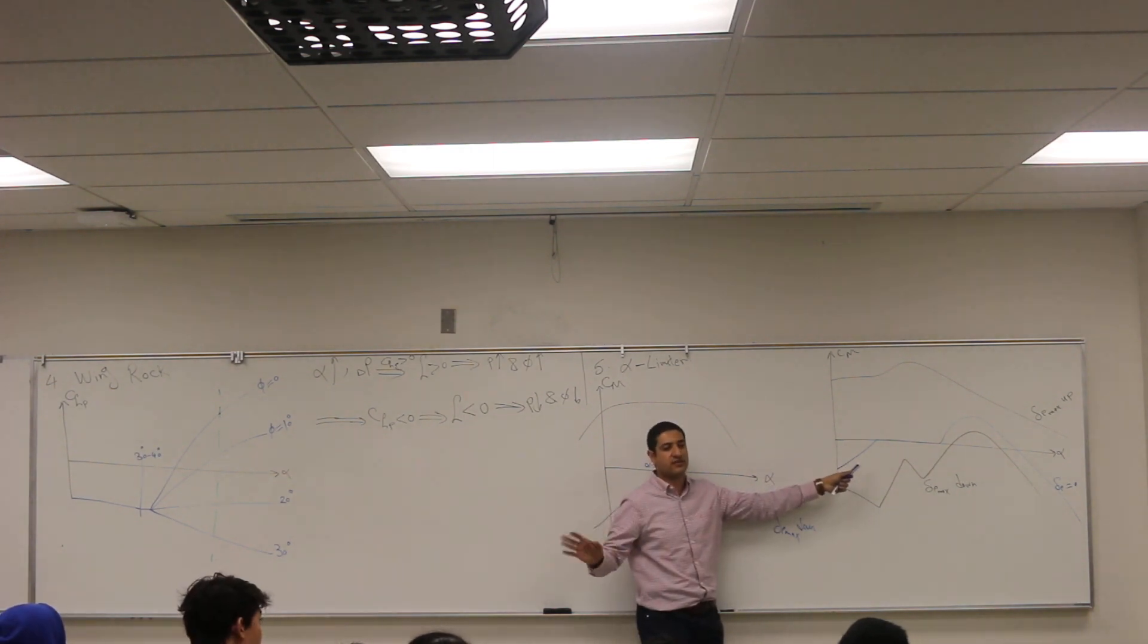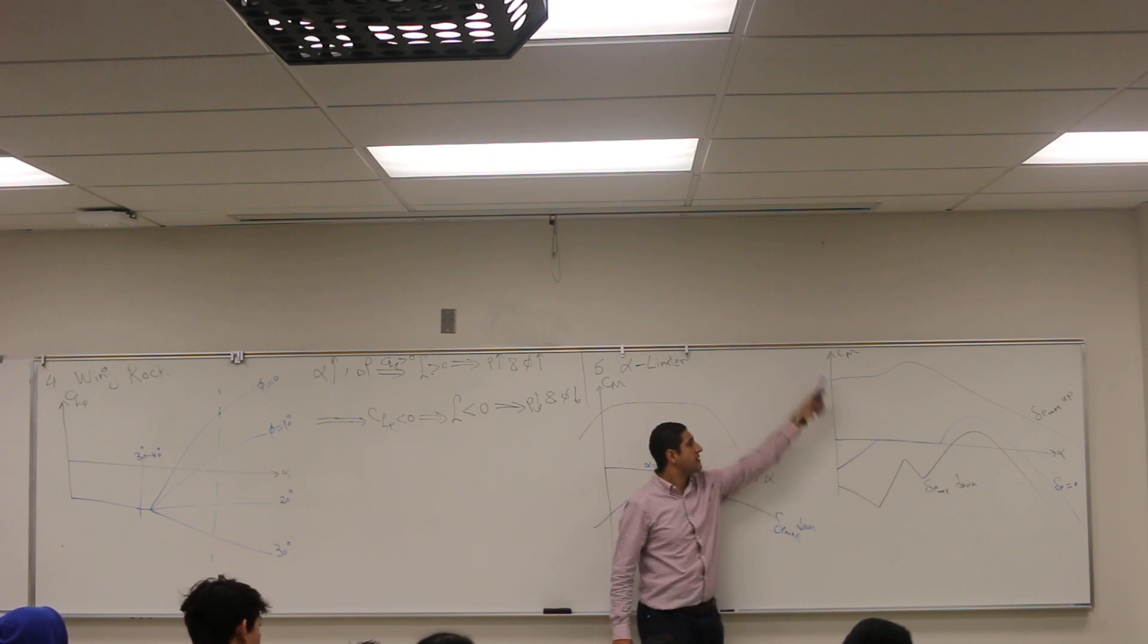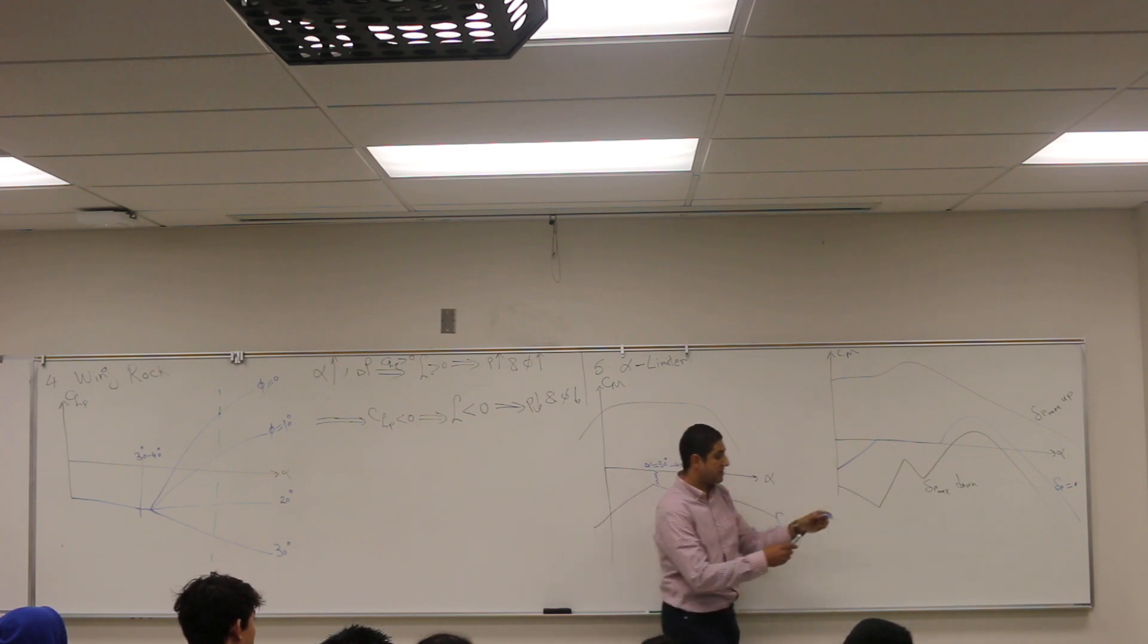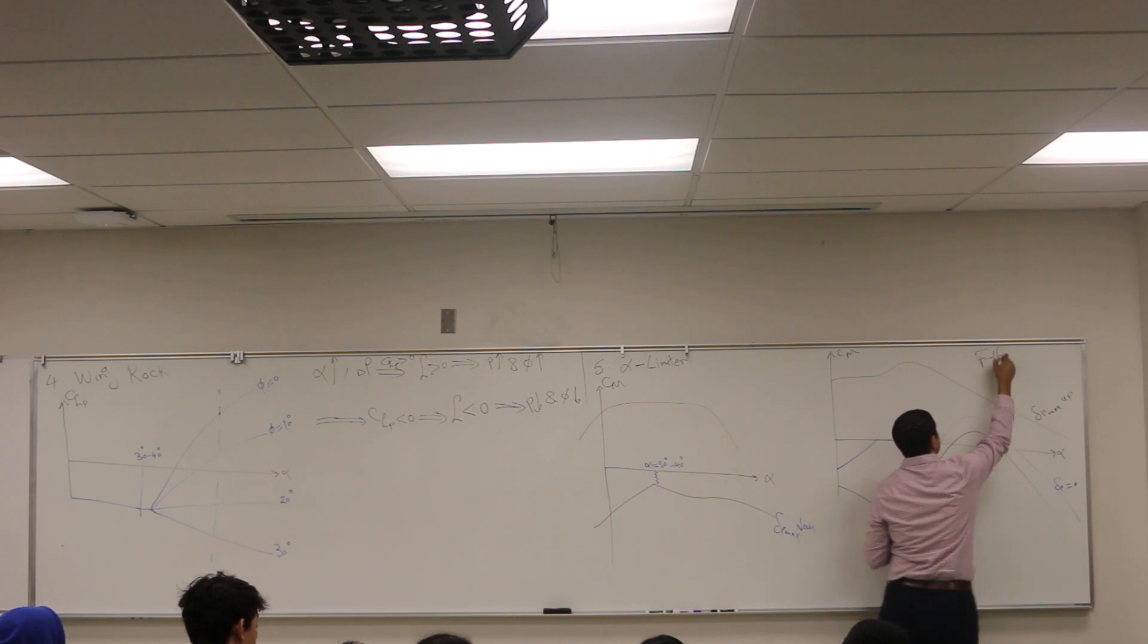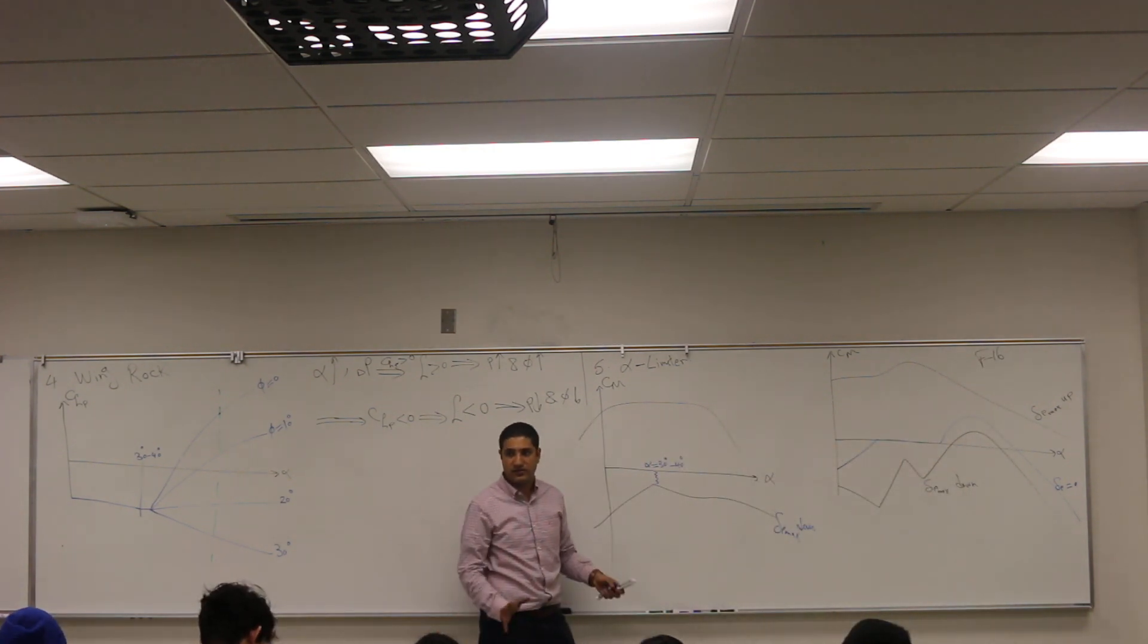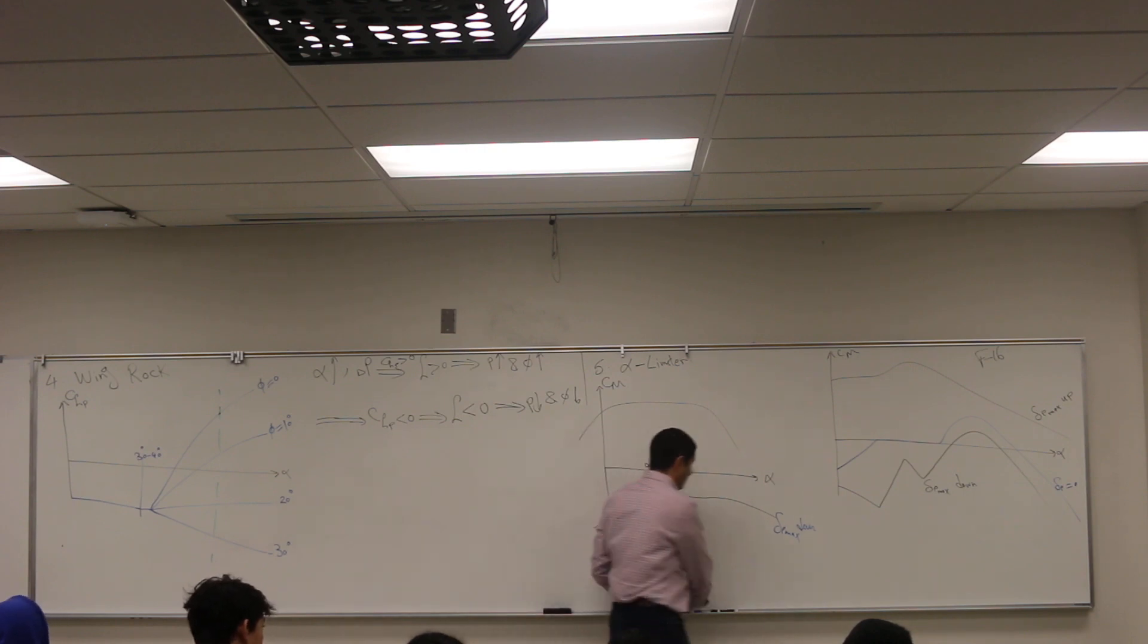This is the natural characteristics of the airplane, no control. This curve is Cm versus alpha. What can you infer here? Positive - dCm/dα is positive, which means what? Unstable. So this airplane is naturally unstable. So there's one thing that you can infer quickly from this curve.